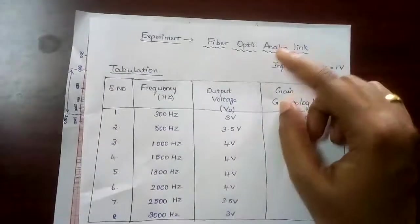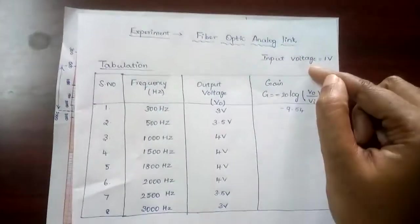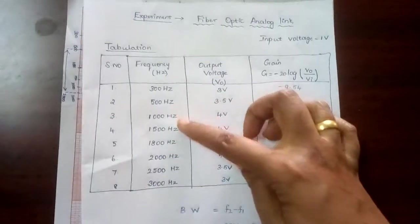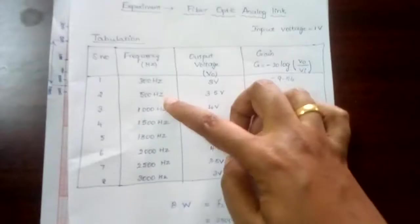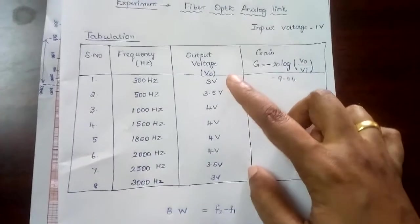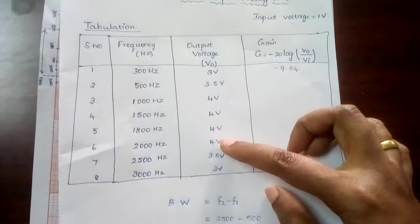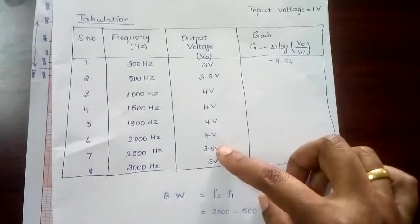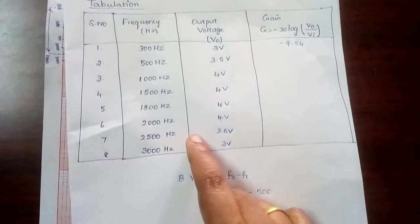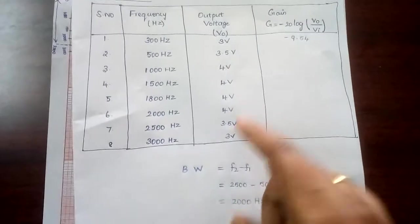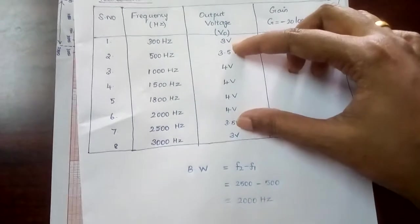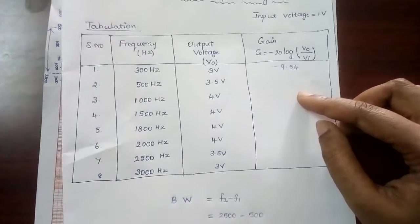For the calculation part, this is the Fiber Optic Analog Link. Set the input voltage to 1, then set the first frequency value and increase it — from 300 Hz to 3000 Hz and keep increasing. First increase by 4, then decrease — how to decrease and how to increase — then increase again. Calculate the gain value.